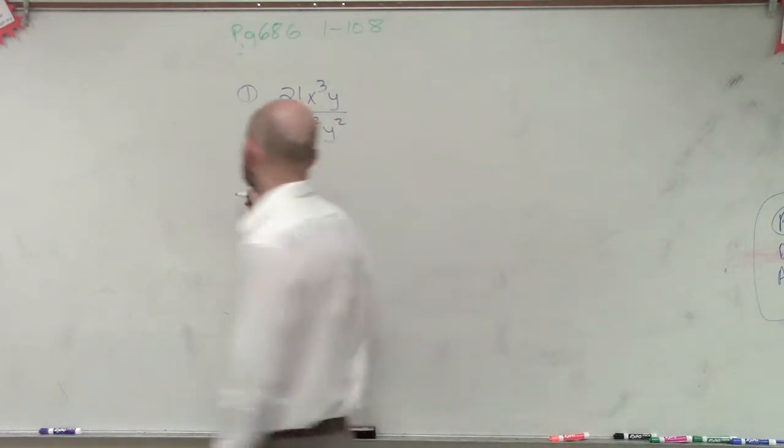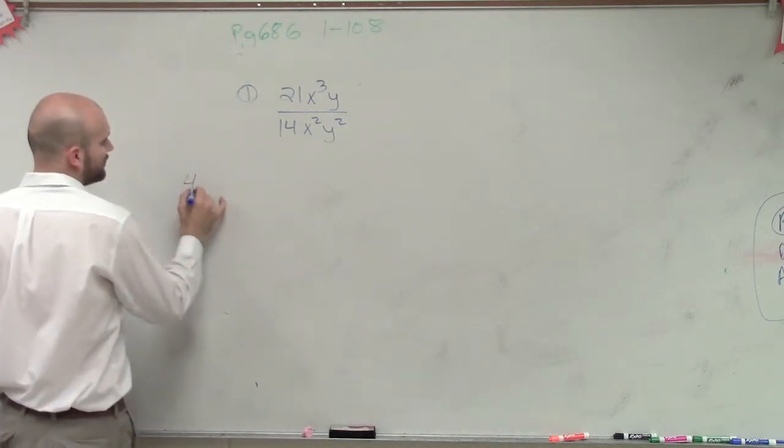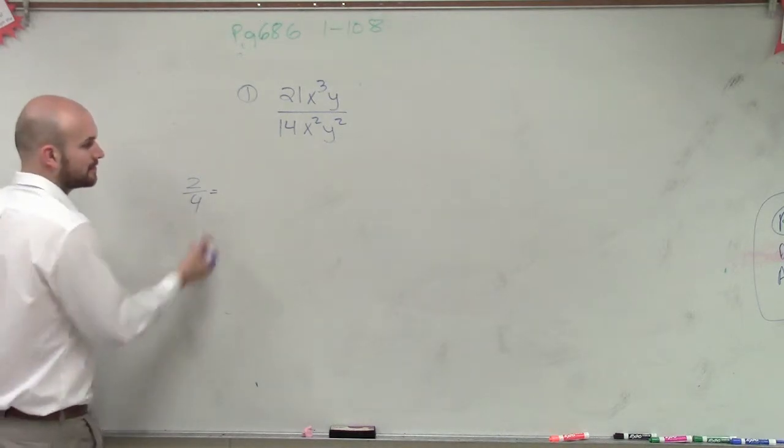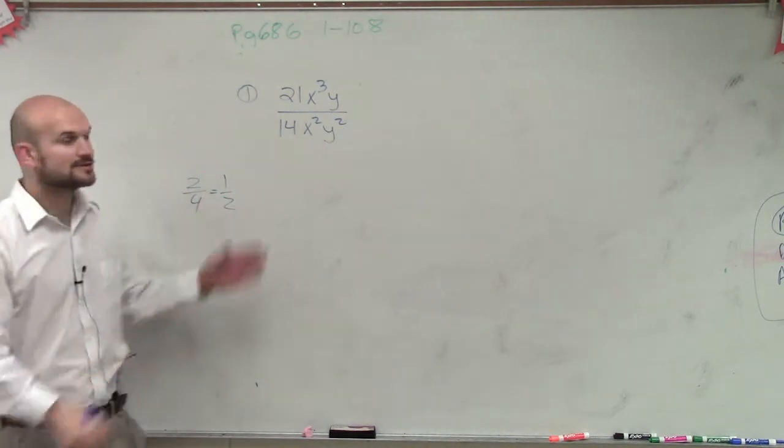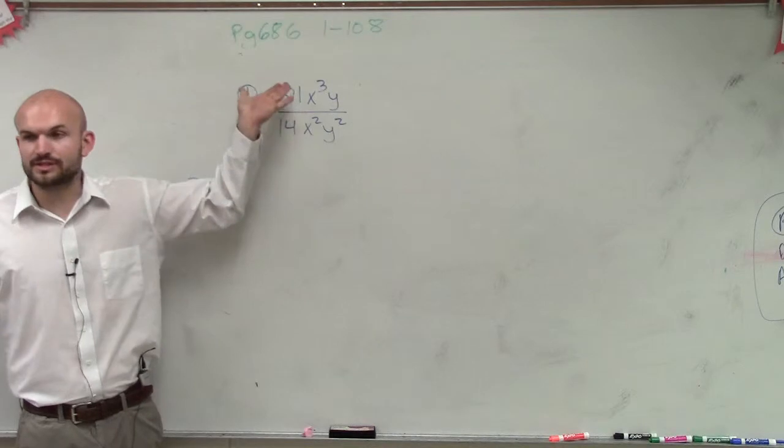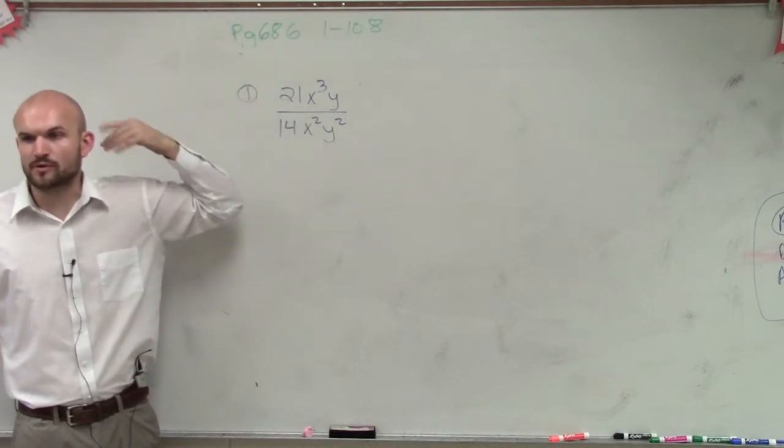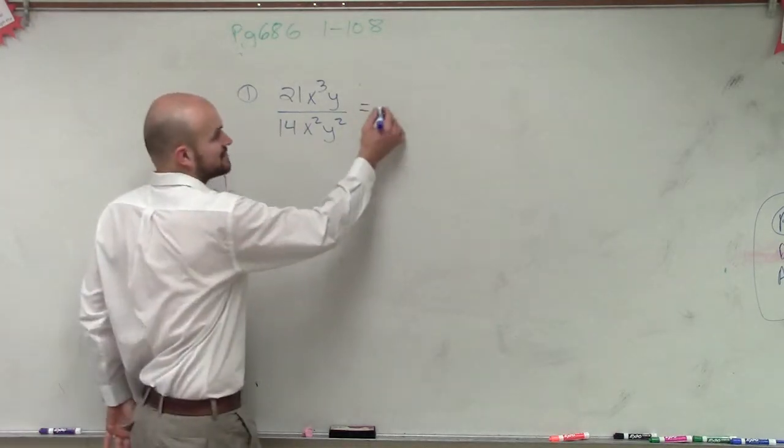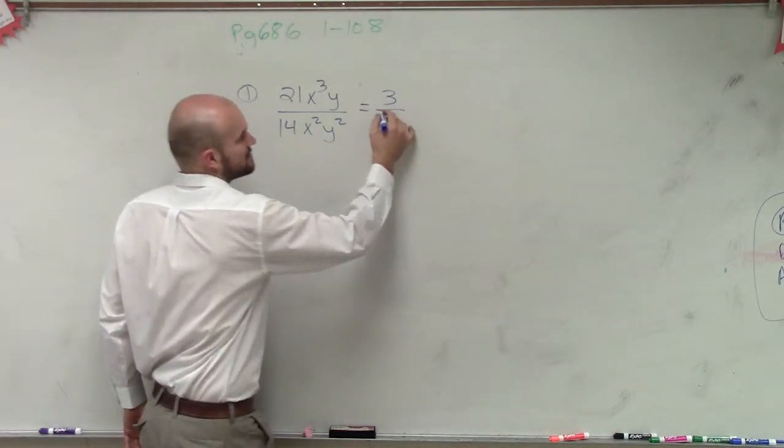You don't know, OK. So we know that 2 over 4 reduces down to what? One half, right? So let's look at this. What does 21 and 14 share? What divides into both 21 and 14? 7, right? So 7 goes into 21 three times, and it goes into 14 two times.